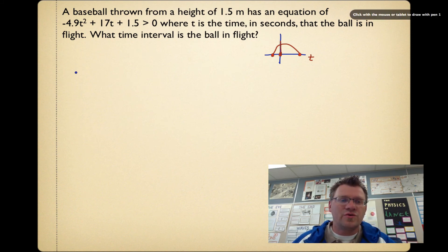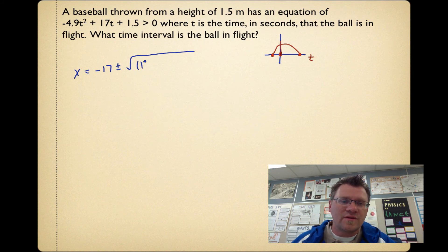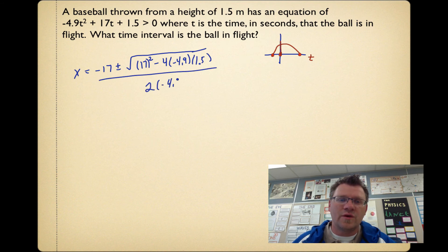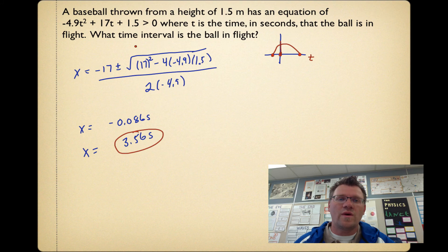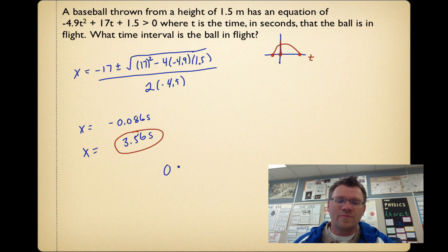We should use the quadratic formula here. x equals negative 17 plus or minus the square root of 17 squared minus 4 times negative 4.9 times 1.5, all over 2 times negative 4.9. This gives two answers: negative 0.086 seconds, which is irrelevant because time can't be negative, and 3.56 seconds, which is our answer. The ball is in flight for the time interval from 0 to 3.56 seconds.